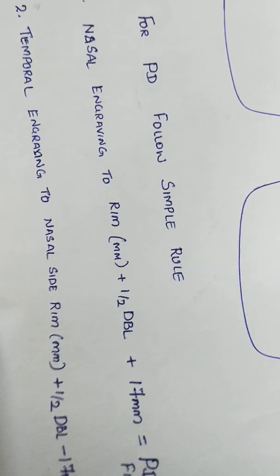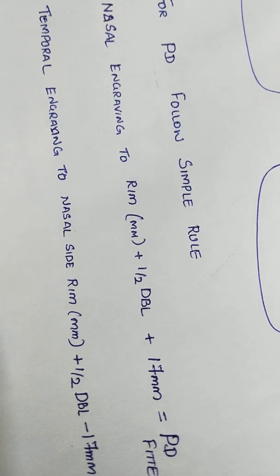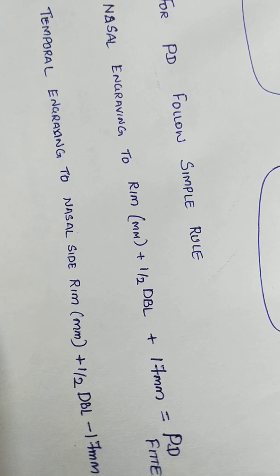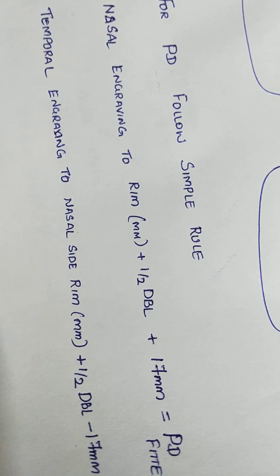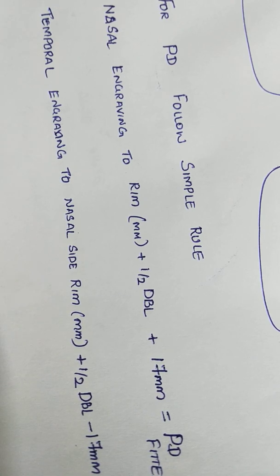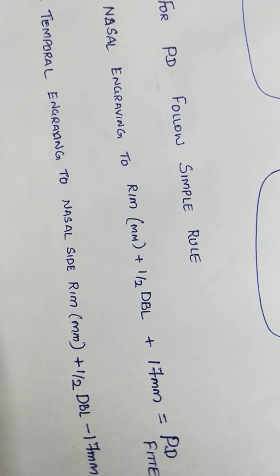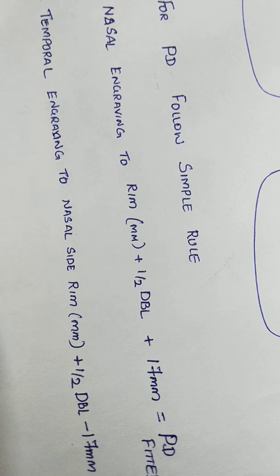It is the same thing - temporal engraving which was 40, plus half of the DBL. DBL is 18 in this case, so 40 plus 9 becomes 49, and you have to subtract 17 mm from that. Why 17? As I already said, micro etching distance is 34, so half of it is 17. So now let us calculate: 40 plus 9 becomes 49, and 49 minus 17 is 32. So it is very simple.